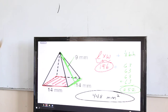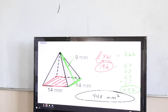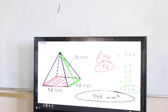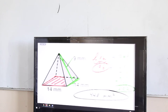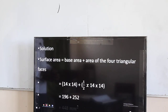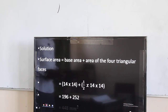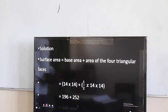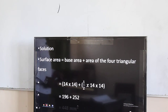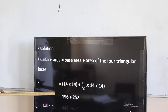So this is the pyramid that we are talking about. If we are trying to find the surface area of a pyramid, you will start with the base. Once you find the area of the base, then you find the area of one of the triangles, multiply by four, and then take the sum. The base area is 14 multiplied by 14, giving us 196.